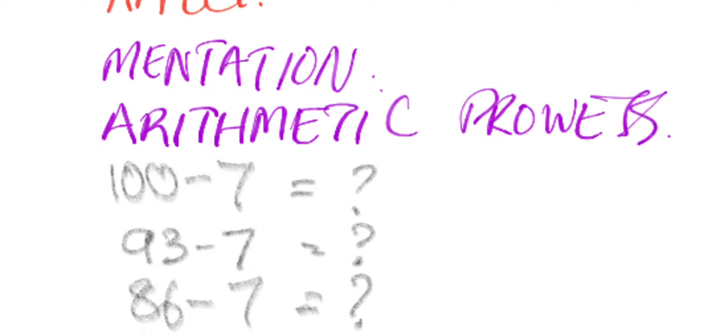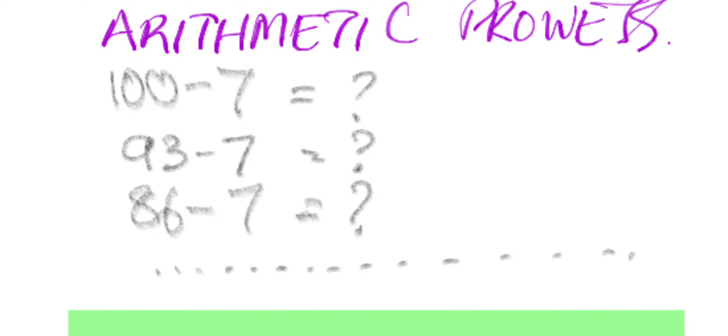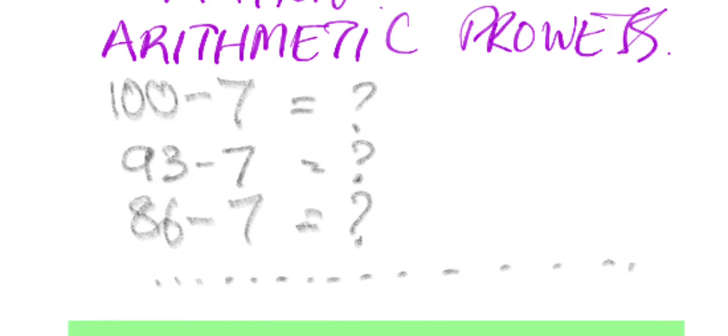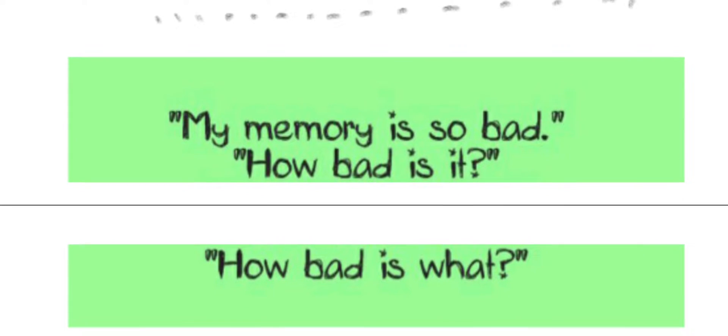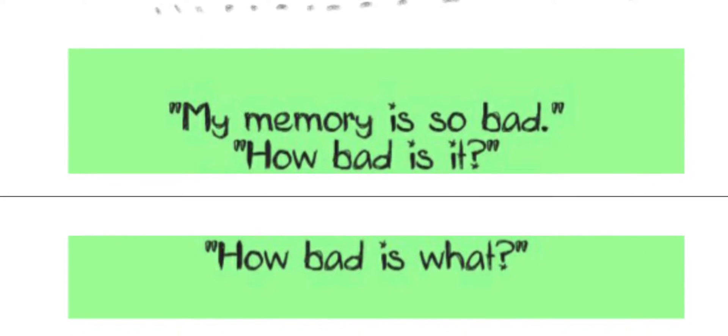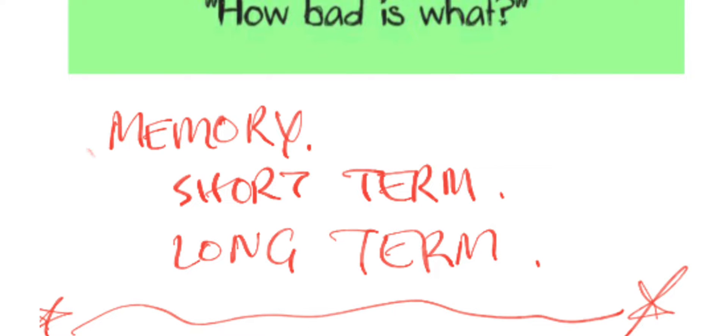You check the mentation of the patient, you check arithmetic prowess—how much math and intelligence the person has. One of the most widely recognized tests is subtracting seven from one hundred. You try this five times: 100 minus 7. Ask the person, can they get the right answer and continue: 93, 86, 79, and so on. You can check the mathematic calculation and how intelligent the person is. Next up is memory. Memory: you need to check short-term and long-term memory and establish the memory of the patient. You're done with the higher mental function, one part is done.